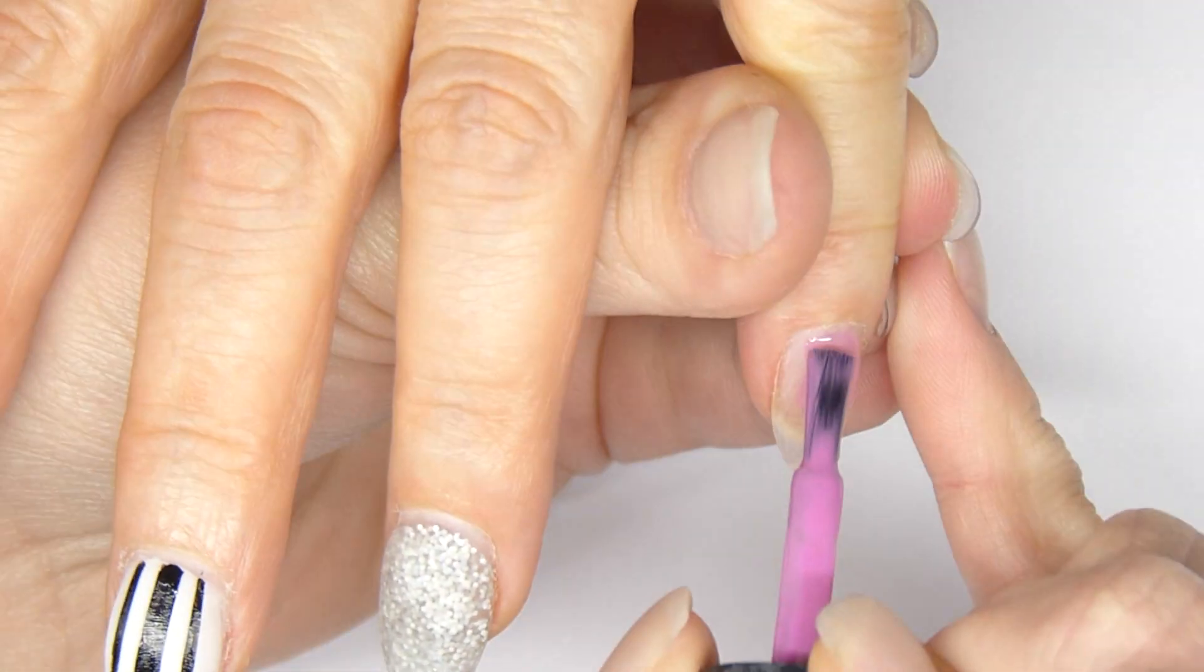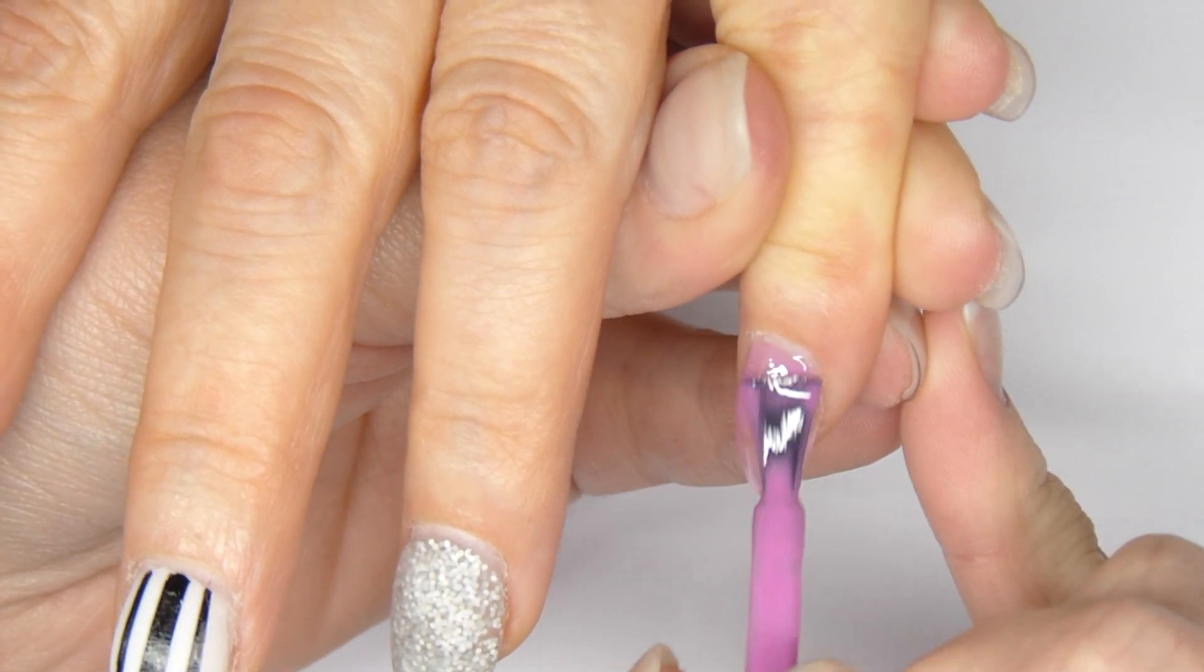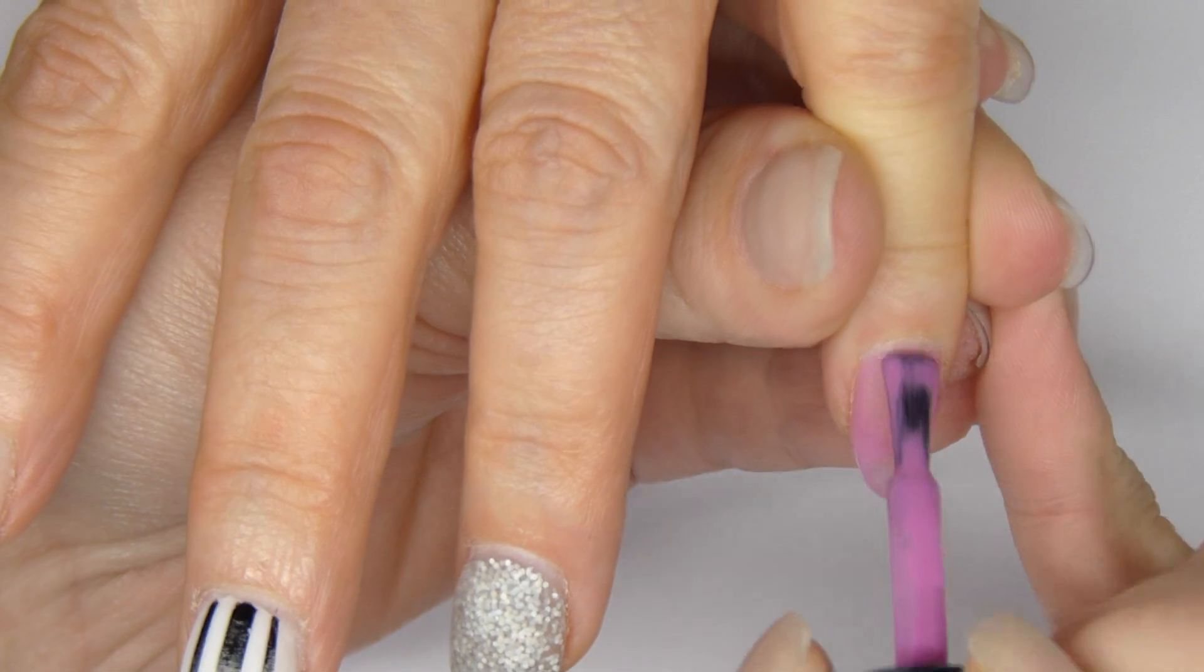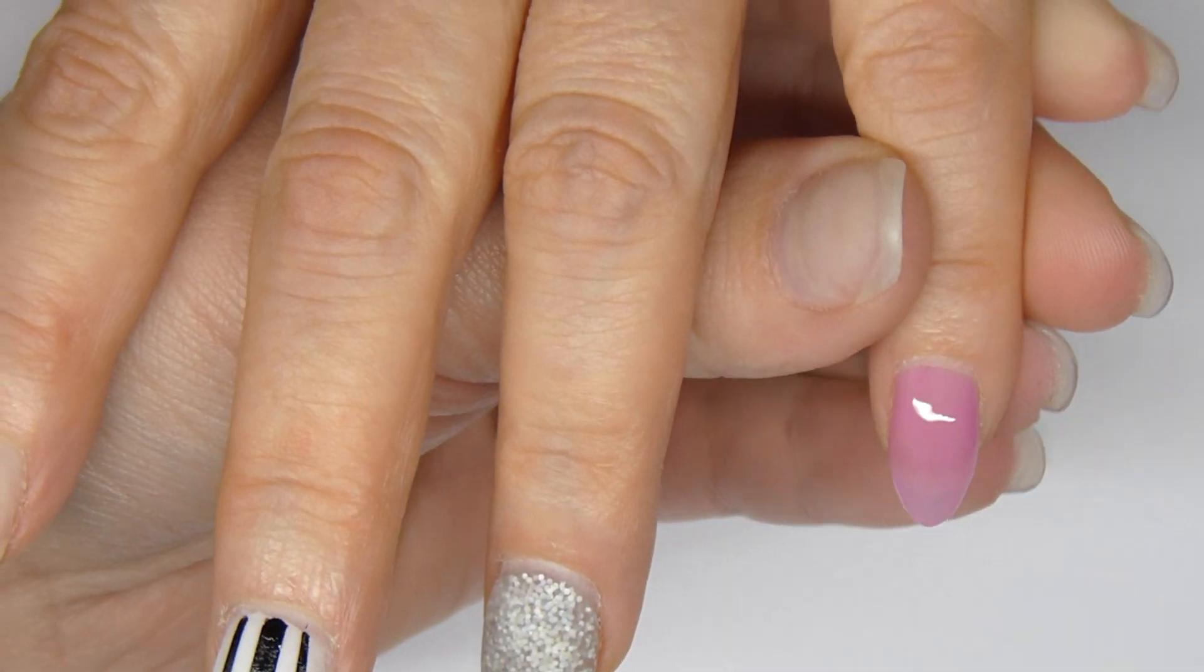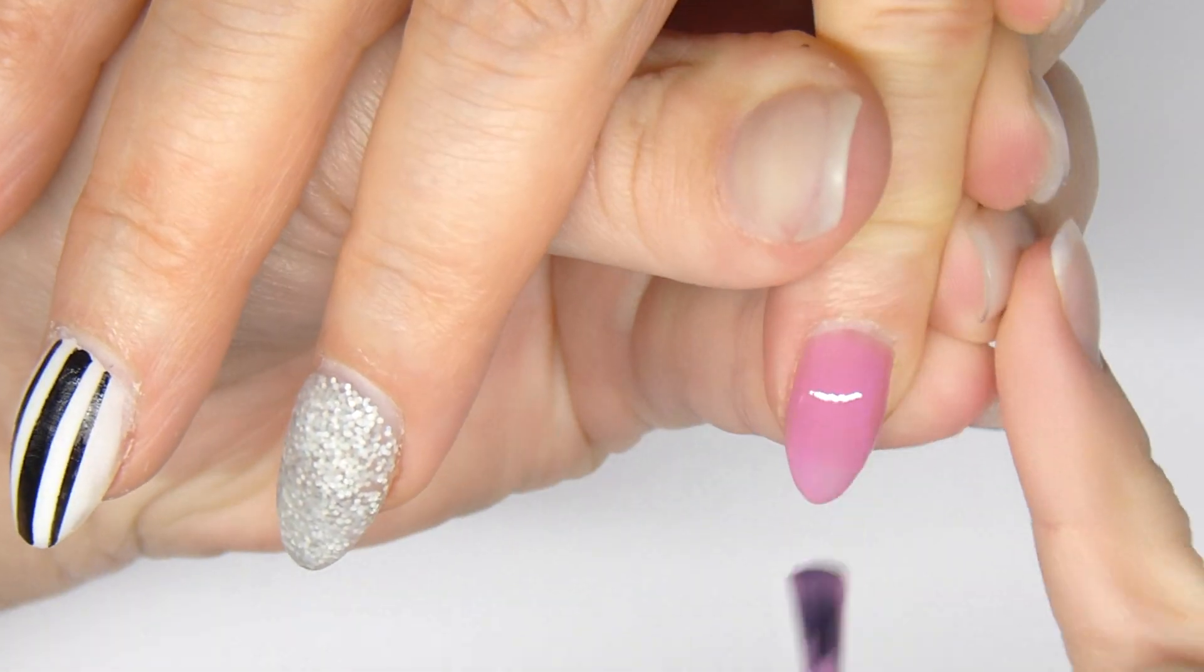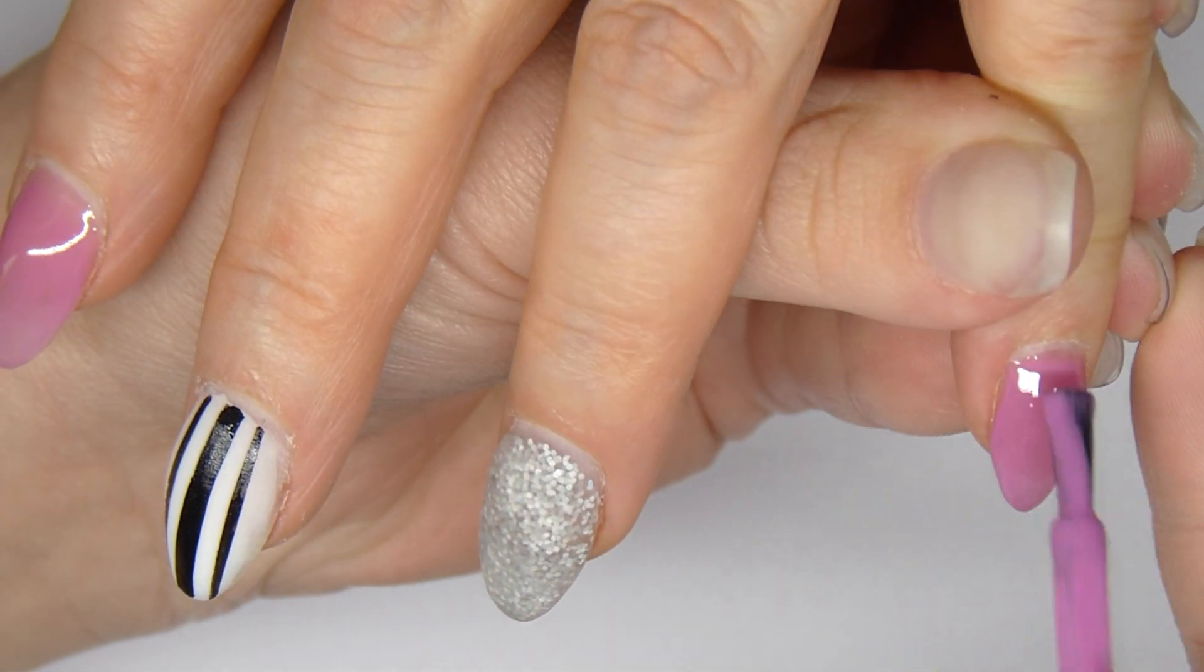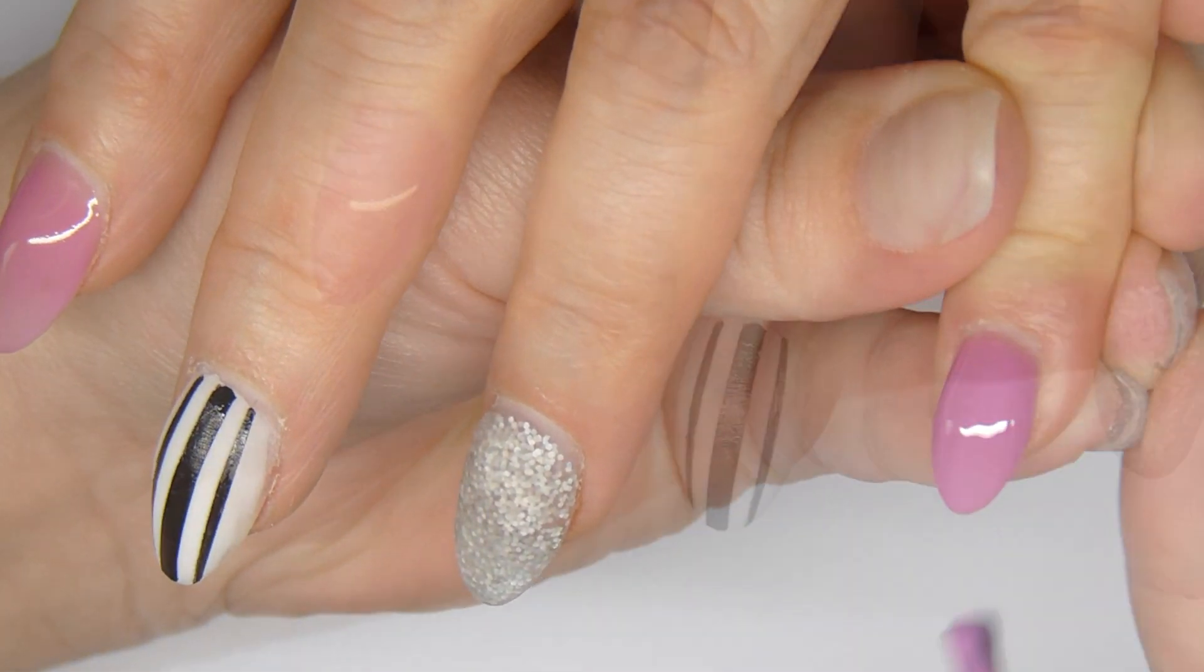And for the rest of the nails which don't have any art on it I just applied a gel color from Bio Seaweed Gels. This is Sugar Berry and I put on one layer. Let it cure for two minutes in a UV lamp or 30 seconds in an LED lamp. And then I applied a second layer and let it cure again.